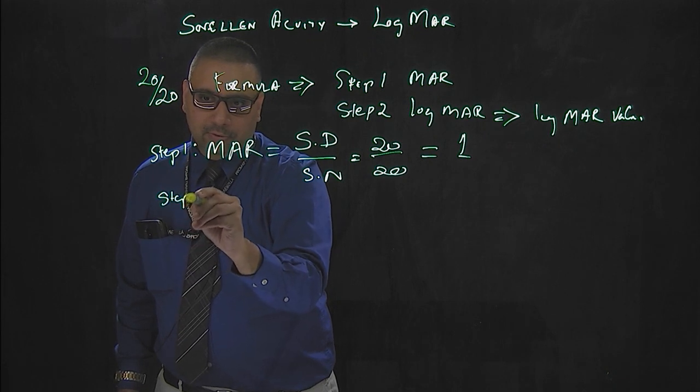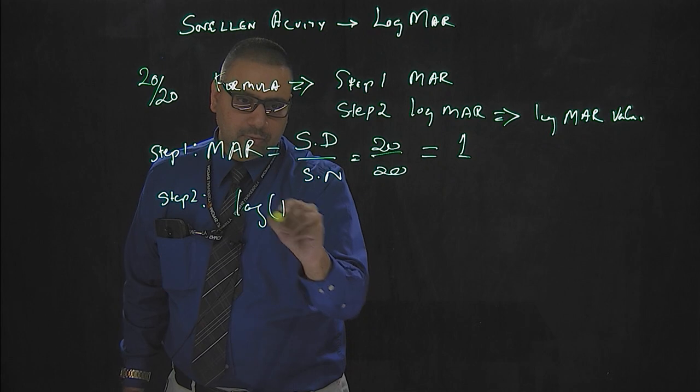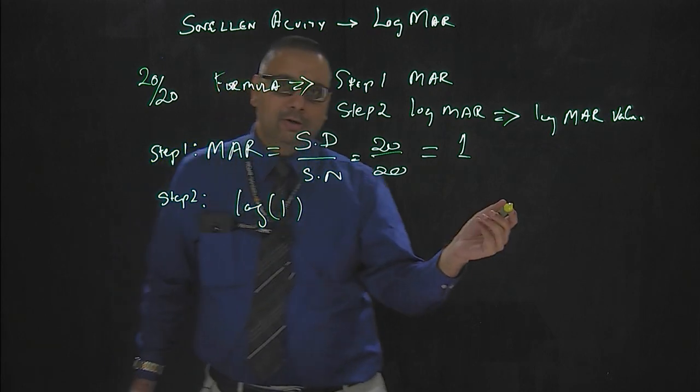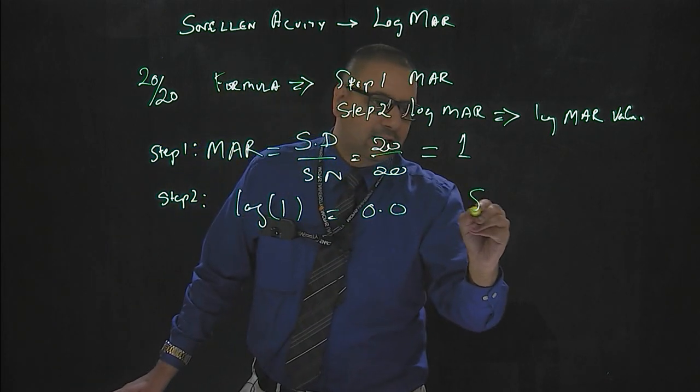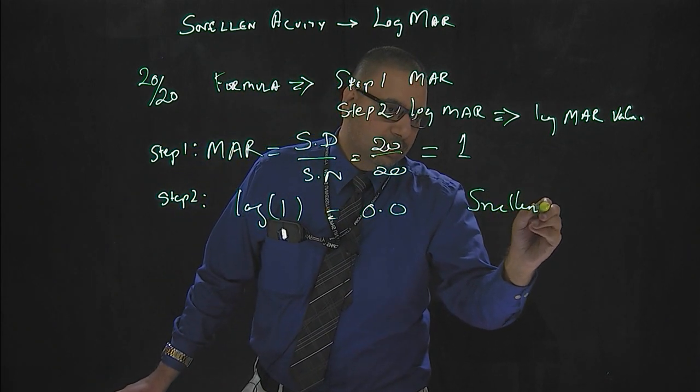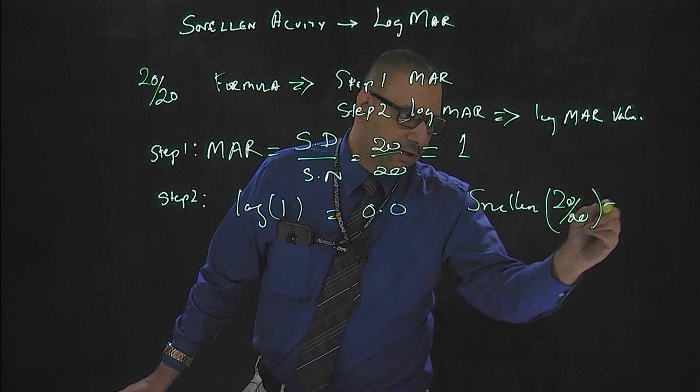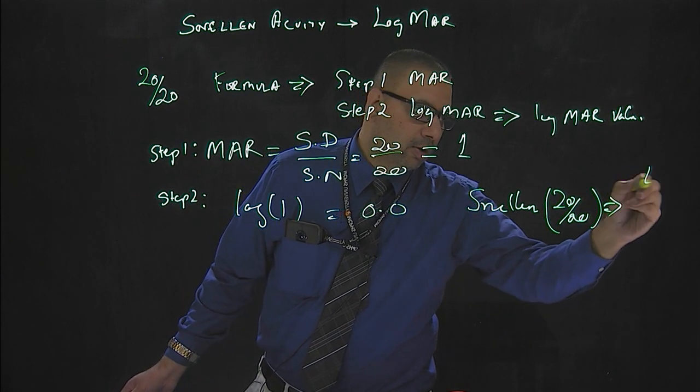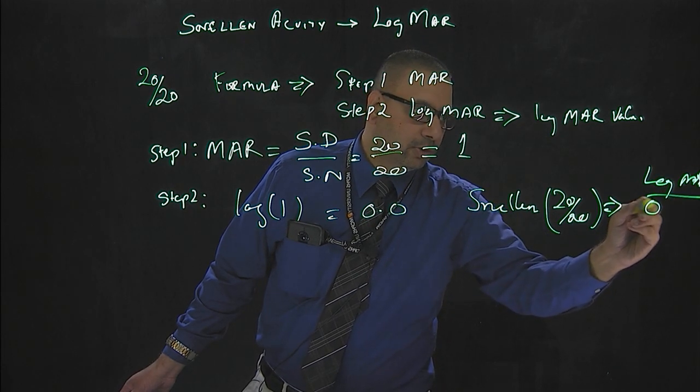Step 2, you take log of 1. If you take log of 1 in your calculator you will end up at 0.0. So the Snellen equivalent of 20/20 is equal to a log MAR value of 0.0.